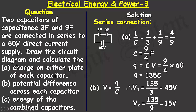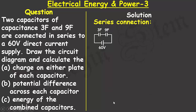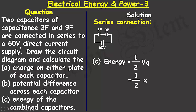For part (c), the energy formula is E = ½ × V × Q. Substituting: ½ × 60 volts × 135 coulombs gives the energy of the combined capacitors as 4050 joules.